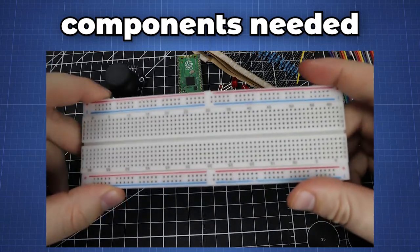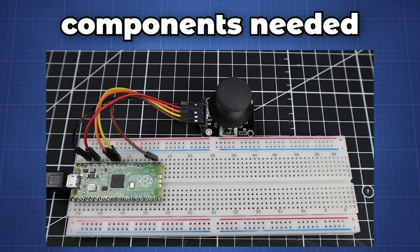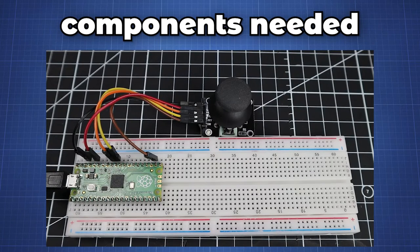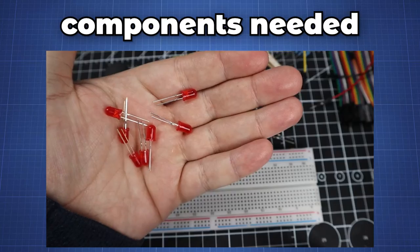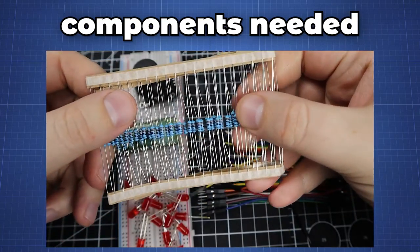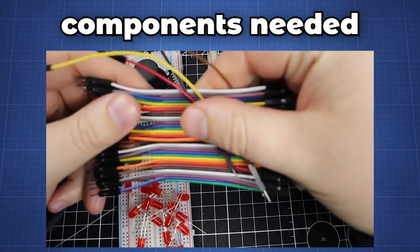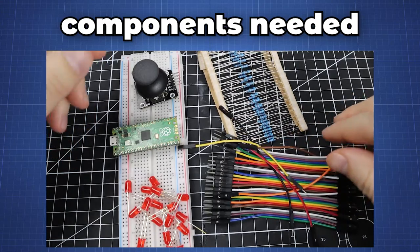A breadboard which is optional but for our demonstration we will connect the joystick to the Pico with jumper wires to set it up and do a few simple tests. LEDs and any resistor values between 330 ohm to 1 kilo ohm. And then finally you will need jumper wires.